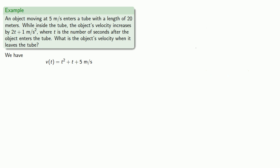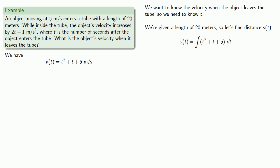We want to know the velocity when the object leaves the tube, so we need to know what t is at that instant. We're given a length of 20 meters, so let's find the distance s of t that the object has traveled. Since s of t is measured in meters and v of t is measured in meters per second, that means that s of t is the antiderivative of velocity.